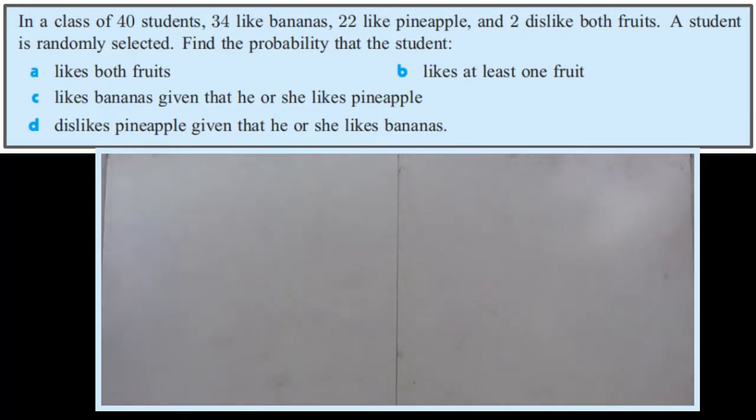Something like this is kind of crying out for you to draw a Venn diagram. It's telling you how many dislike both, we don't know how many like both, it's talking about bananas, talking about pineapples, there's an intersection between the two and so on.